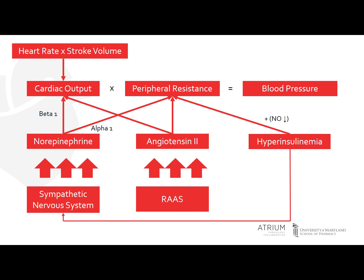This then increases your peripheral resistance, and if sustained would also result in thickening of the arterial walls. Because this starts to affect the endothelial pathway, nitric oxide is often deficient — and nitric oxide is a potent vasodilator — which could also contribute to the increased vasoconstriction. So all of these pathways can lead to an increase in your blood pressure.